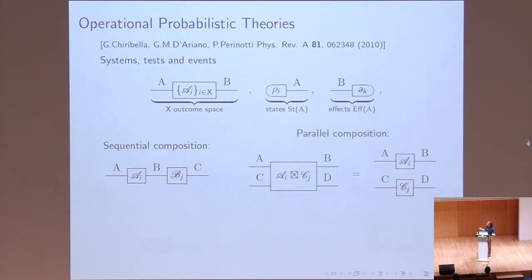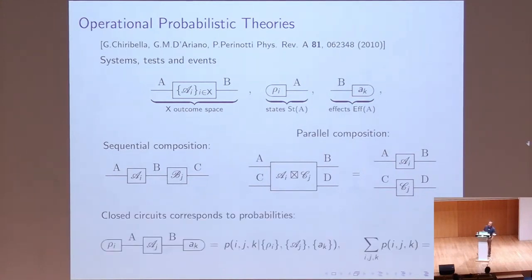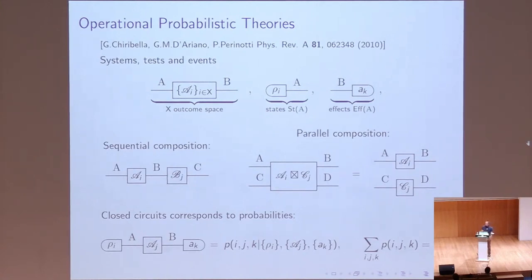On top of this operational structure, we add the probabilistic one by associating a probability with each closed circuit. These probabilities are conditioned by the choice of the tests that form the circuit, and they must be normalized: when we sum over all possible outcomes, we obtain one.